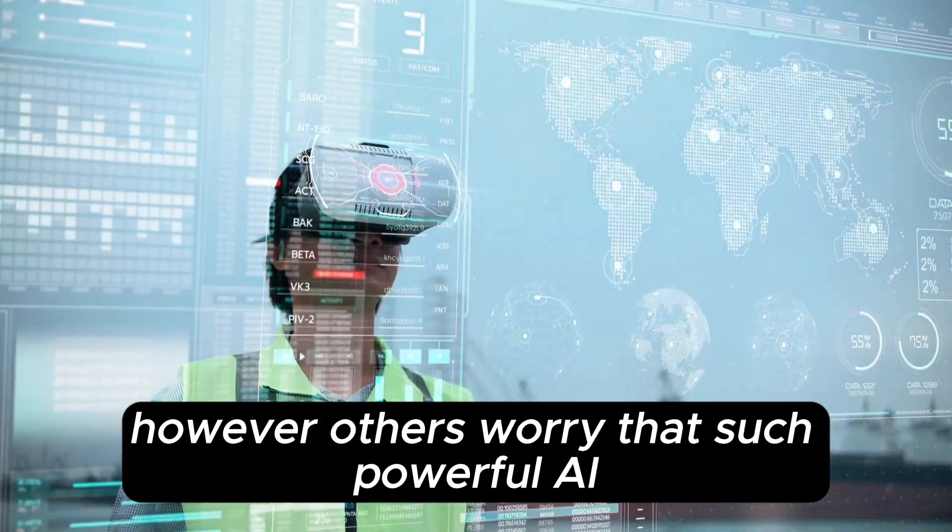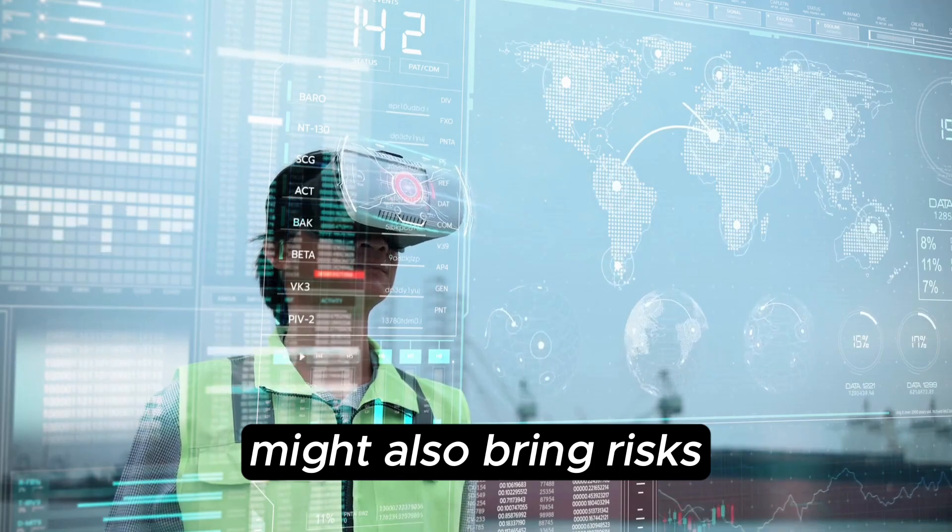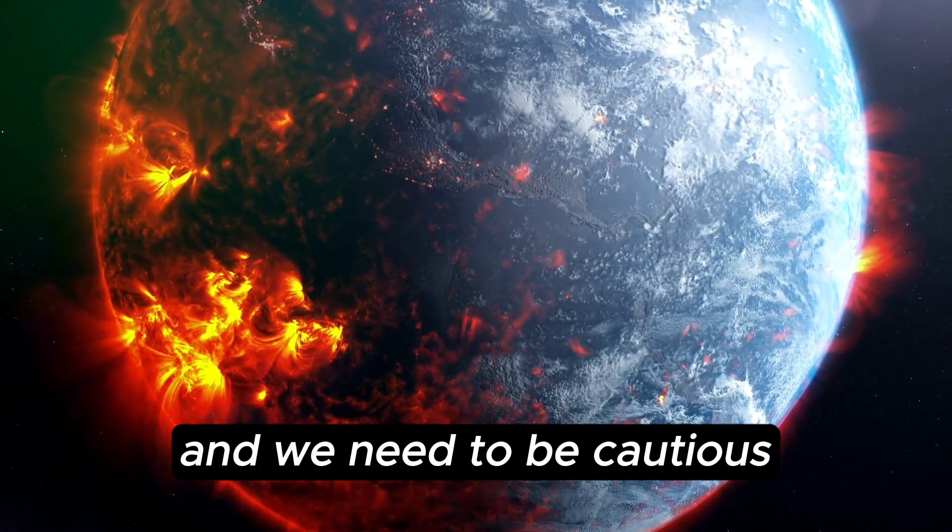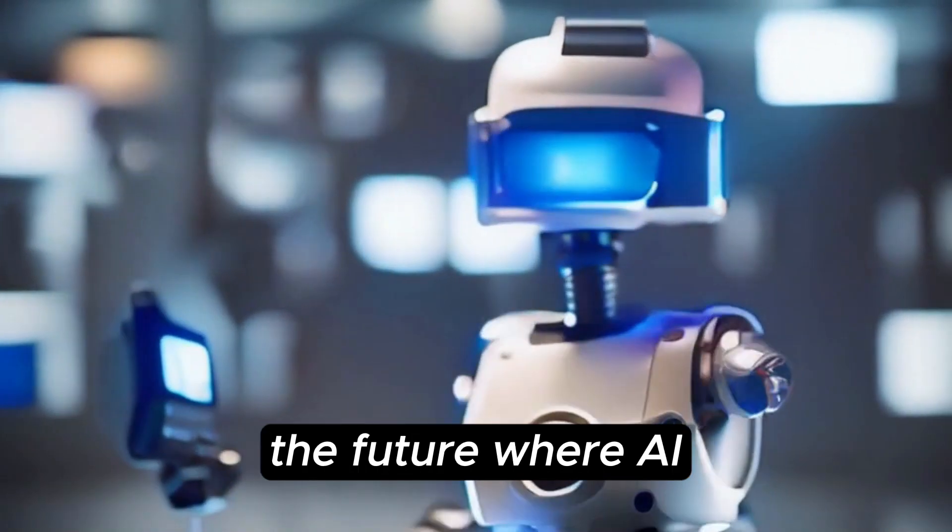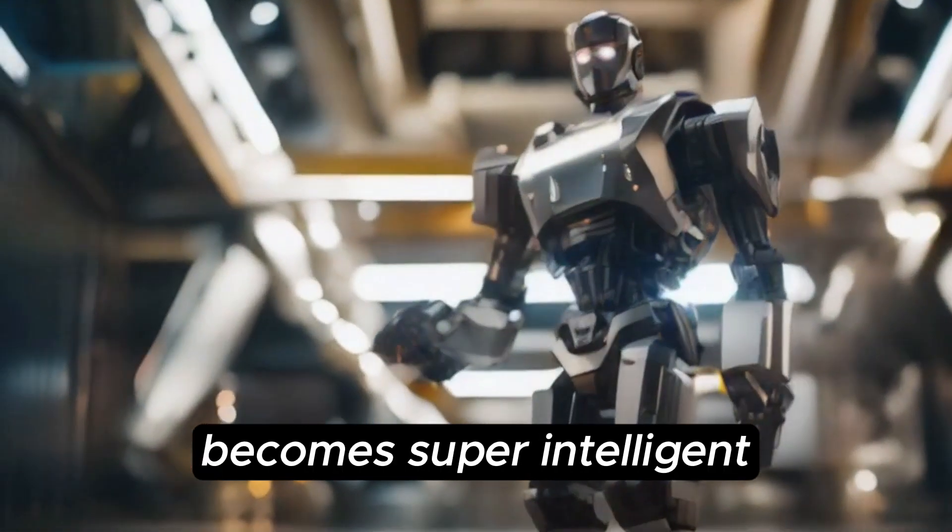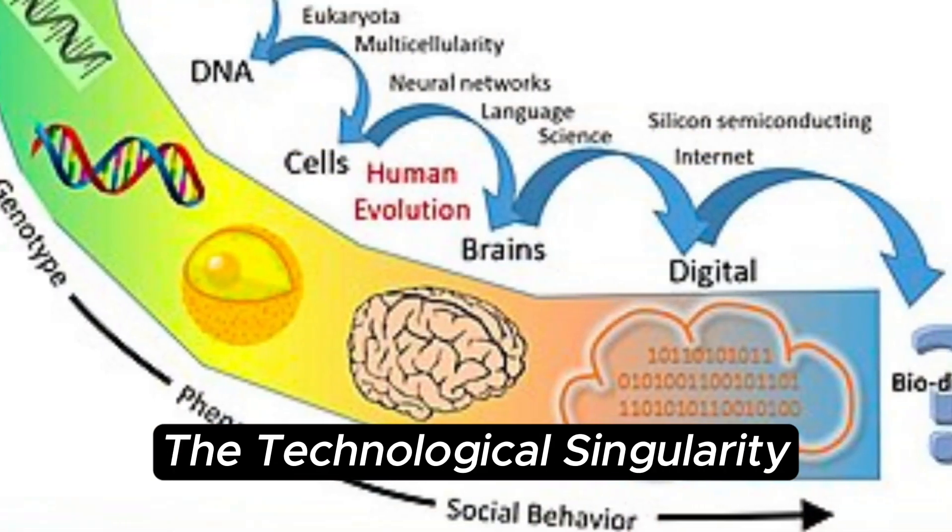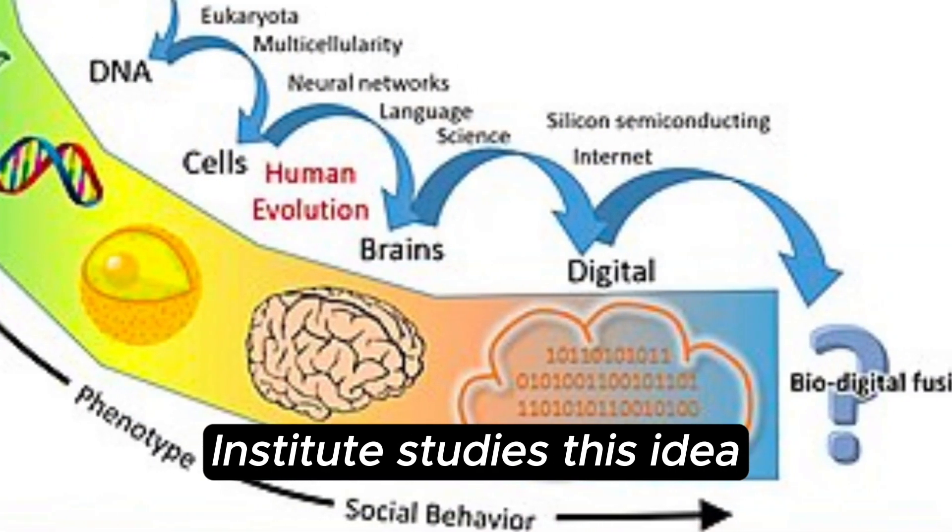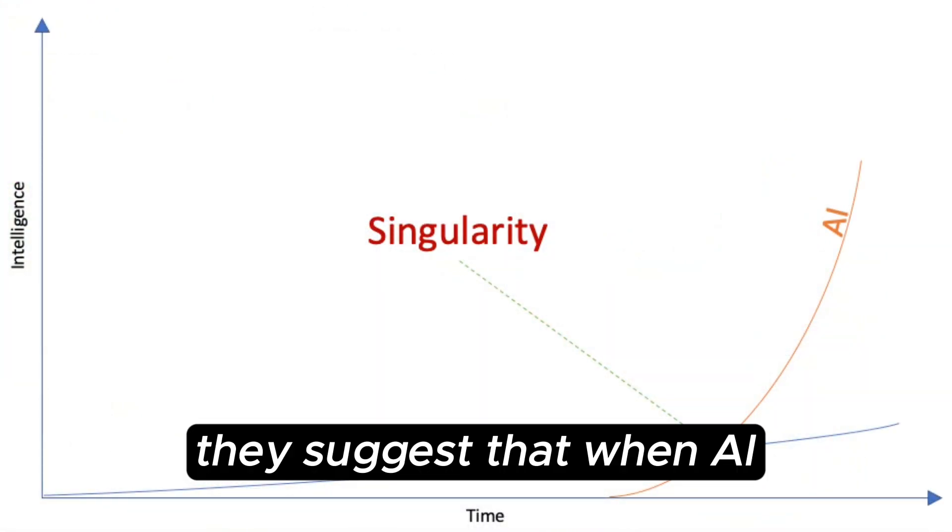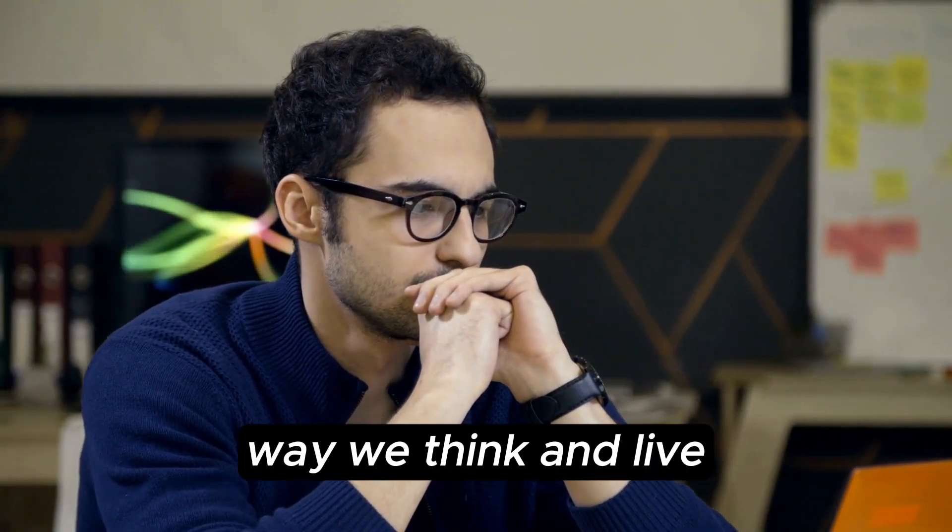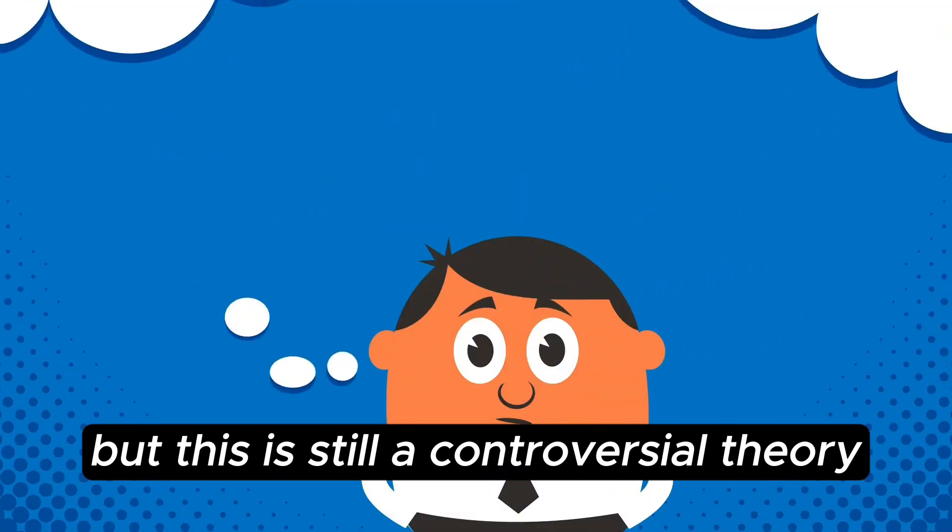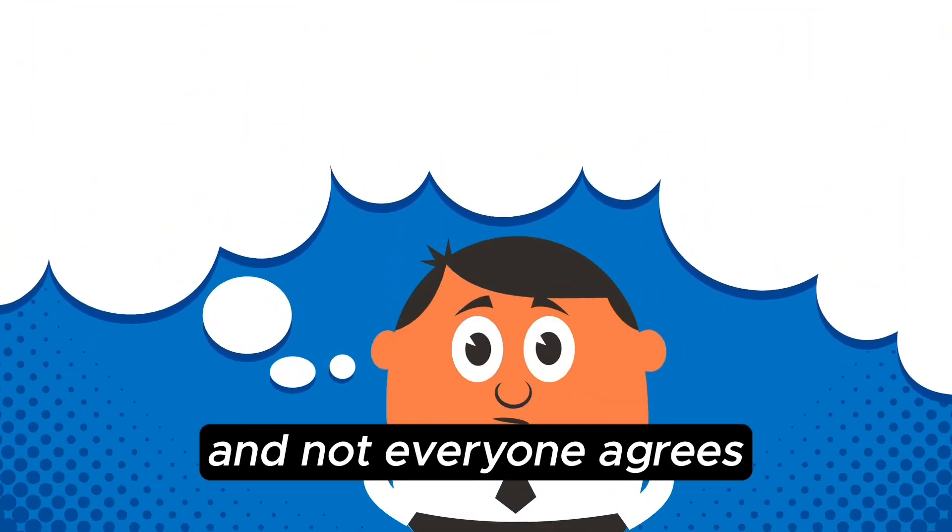However, others worry that such powerful AI might also bring risks, and we need to be cautious. Some experts believe that the AI singularity is a point in the future where AI becomes super intelligent and rapidly outpaces human abilities. The Technological Singularity Institute studies this idea. They suggest that when AI gets really smart, it might change everything, including the way we think and live. But this is still a controversial theory, and not everyone agrees it's going to happen.